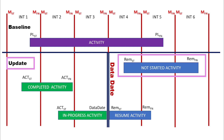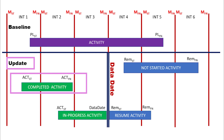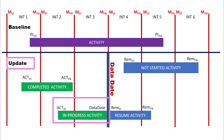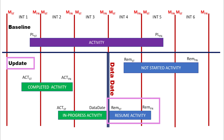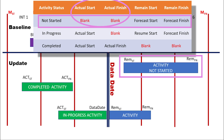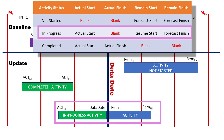Some activities are not started and their dates are after the data date. Some activities have been completed and their actual dates are before the data date. Other activities are in progress, crossing the data date — the part before the data date has started and the other part has a resume date after the data date. To summarize by status: not started activities have blank actual start and finish, with remain start and remain finish as forecasted dates. In-progress activities have an actual start value, blank actual finish, remain start as the forecasted resume date, and remain finish as the forecasted finish date.